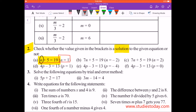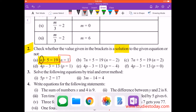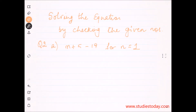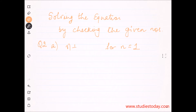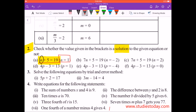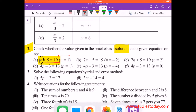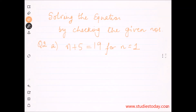So the question is: n plus 5 equals to 19. Phir se likhte hain — n plus 5 equals to 19, for n equals to 1. Let's confirm that. They have already given a value, and we need to check whether it is a solution or not. Isme hum kya karte hain — LHS lete hain.